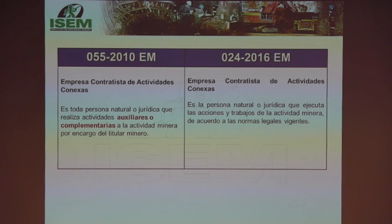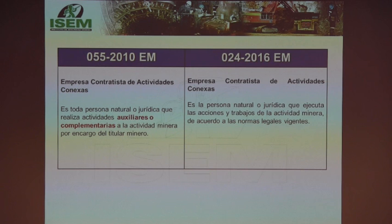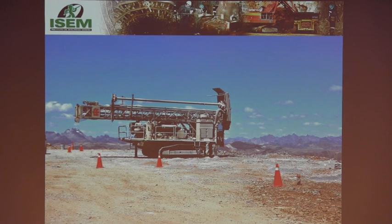Another concept that has changed and, I believe, creates confusion: in DS 055 it explicitly stated that the conexo contractor performs auxiliary or complementary activities to mining. The new text no longer says this, and what is now described actually sounds more like the definition of a mining contractor — 'executes actions and works of mining activity.' This seems like a digital/typing error. The conexo contractor definition only exists in the mining sector.